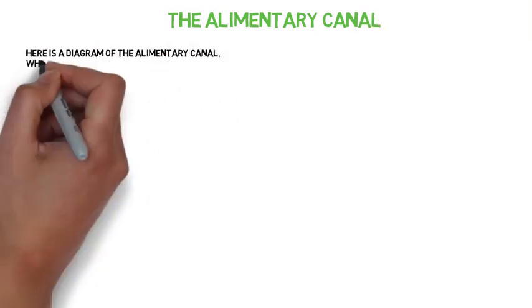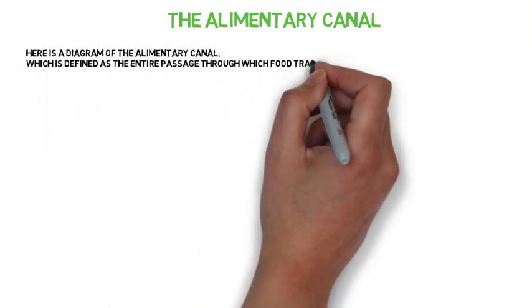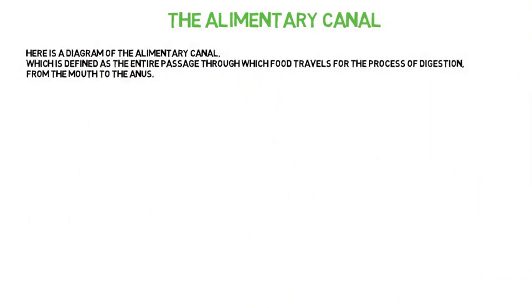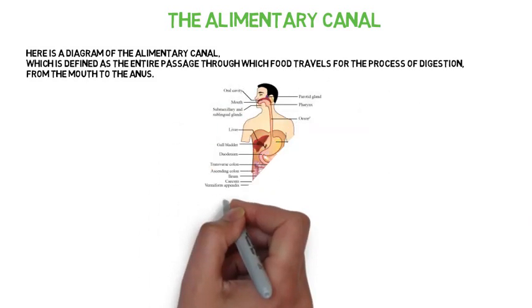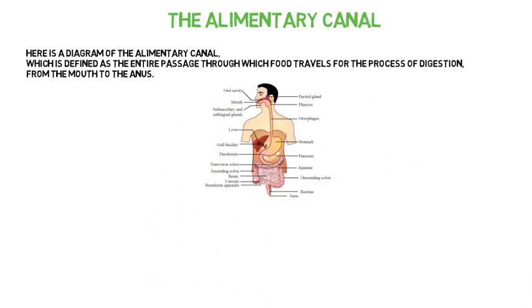The alimentary canal consists of: mouth, oesophagus, stomach, the small intestine — which consists of the duodenum and then the ileum — the large intestine, colon, rectum and anus.